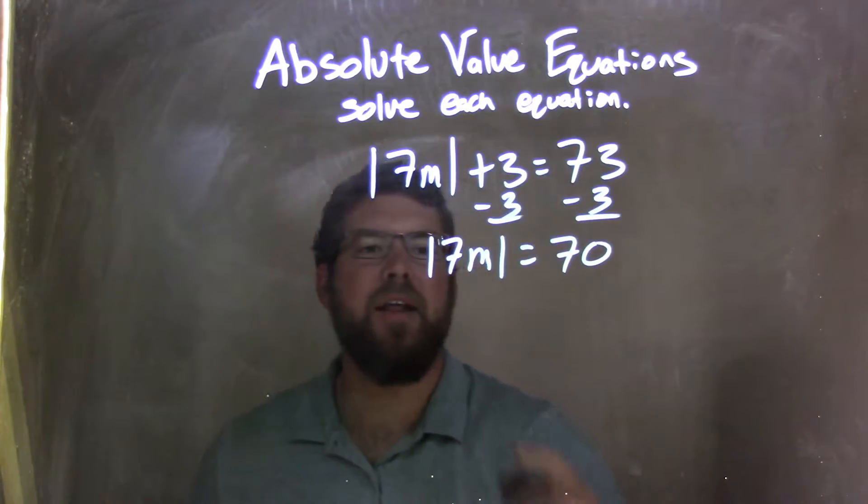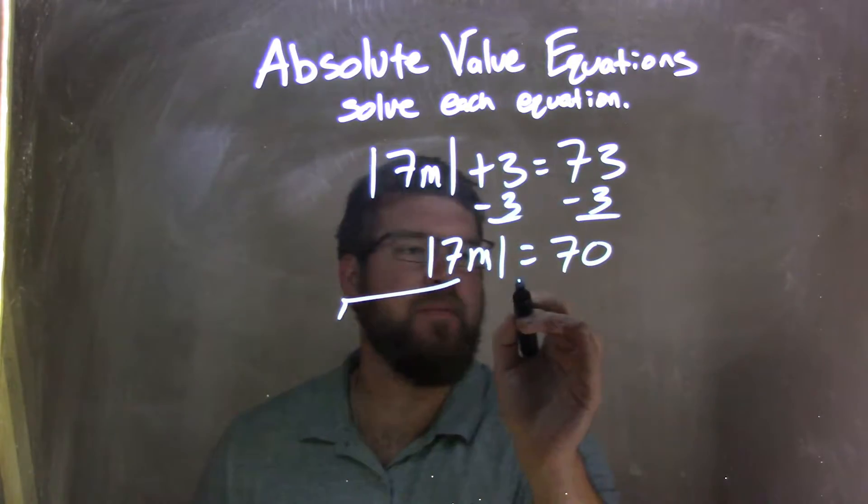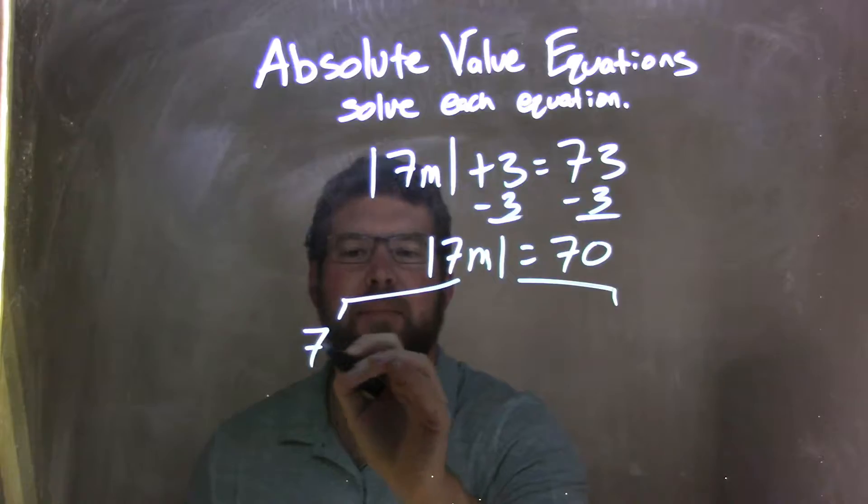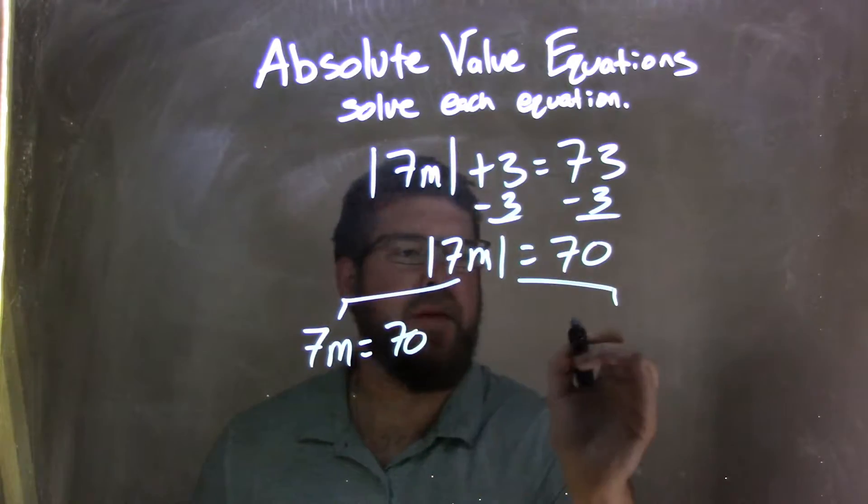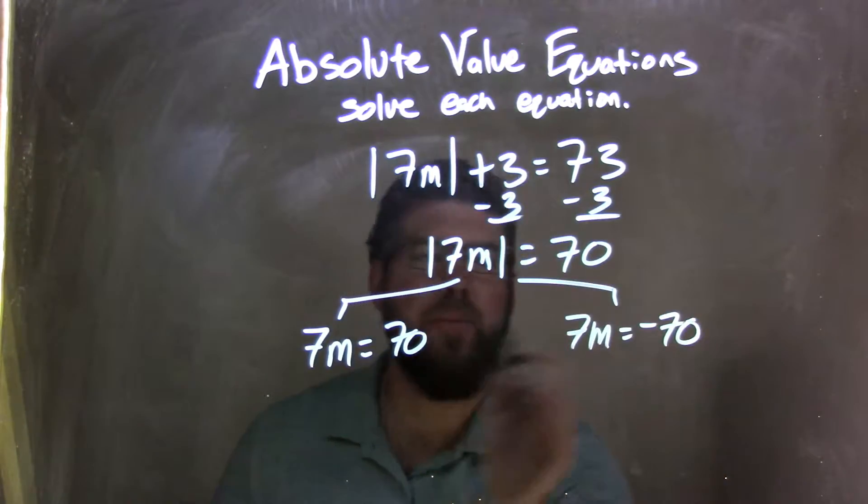Now my next step is I can get rid of the absolute value, but break this apart into two equations. So we have 7m equals 70, and 7m equals negative 70. When you break it apart, you make it into a positive and negative.